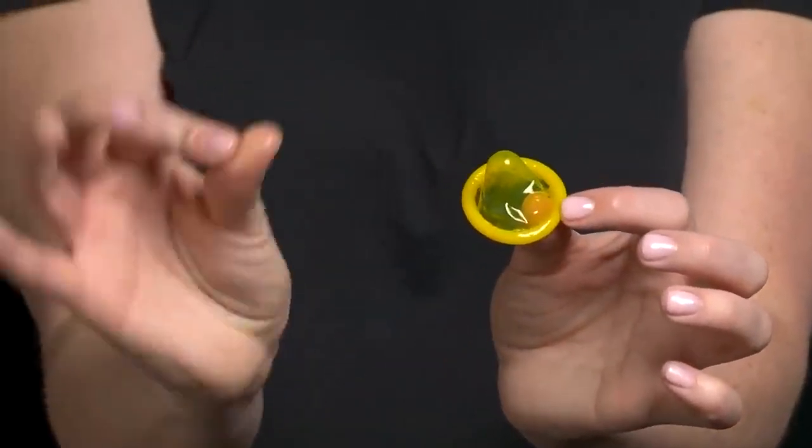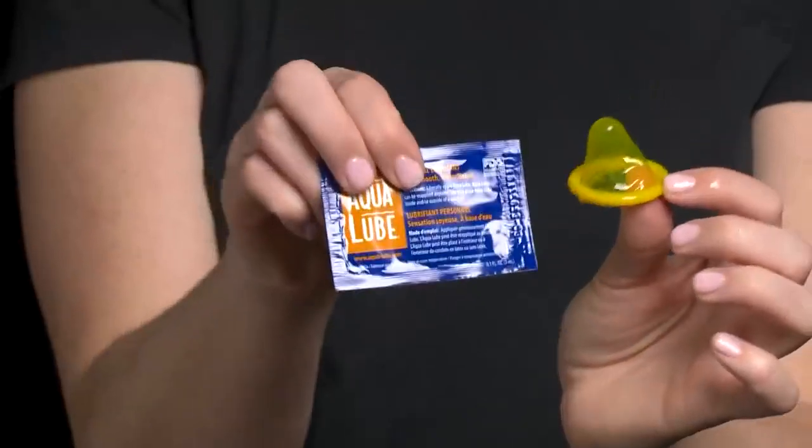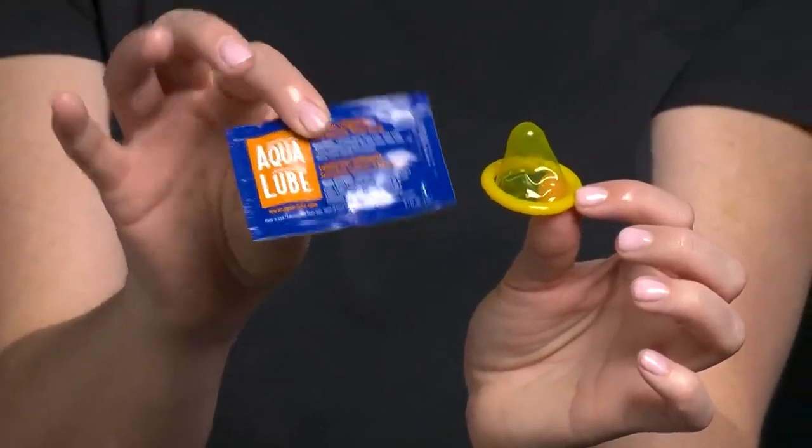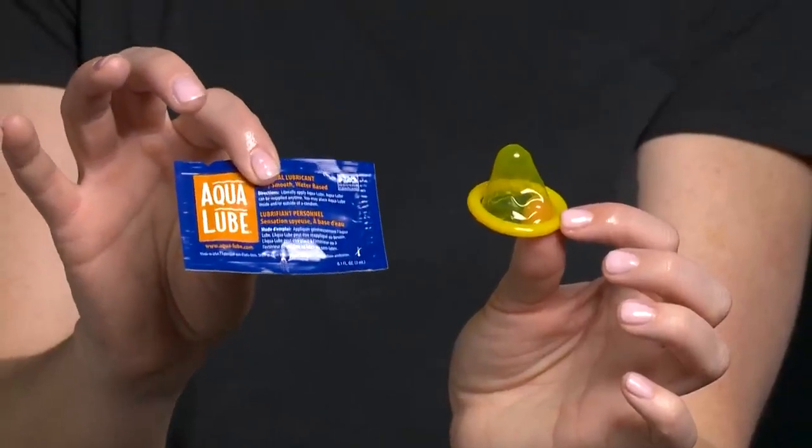Condoms sometimes come with lubricant already on them and you can add more water-based or silicone-based lubricant if you want. Anything with oil in it will break a condom, such as body lotion.